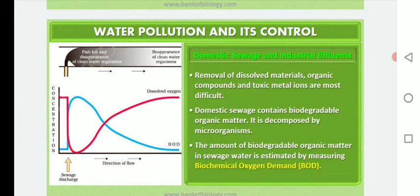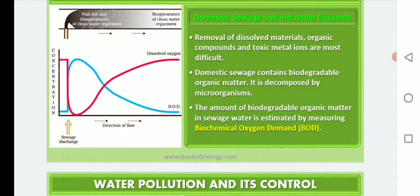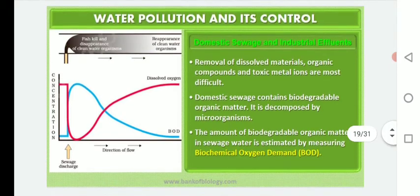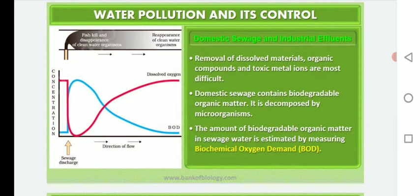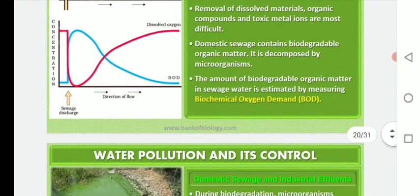Removal of dissolved organic compounds and toxic metal ions are the most difficult aspects of water pollution control. Domestic sewage contains biodegradable organic matter that is easily decomposed by microorganisms. The amount of biodegradable matter present in sewage water is measured by Biological Oxygen Demand (BOD). By measuring BOD, we can measure the amount of water pollution and the level of pollutants present in water.